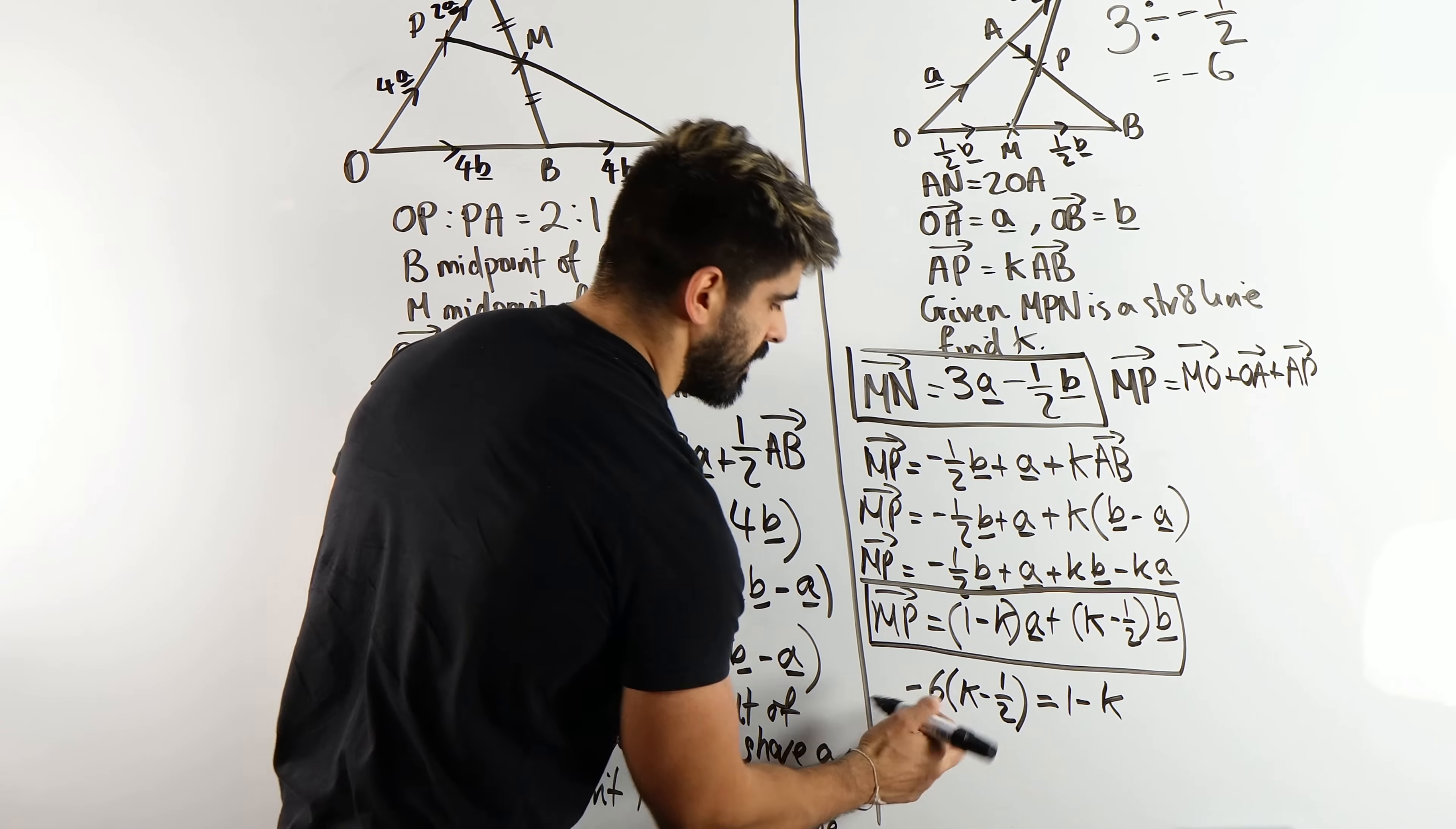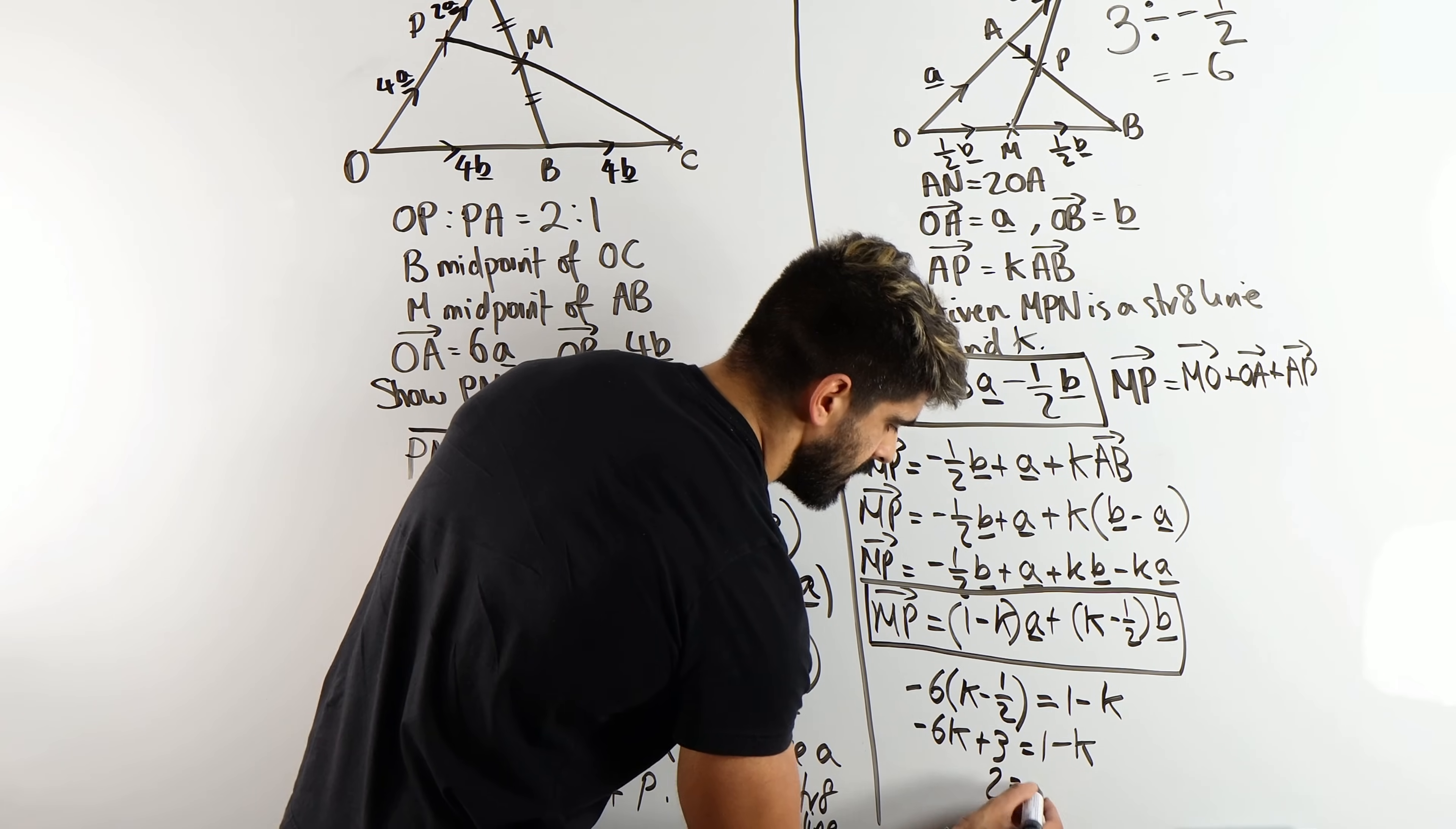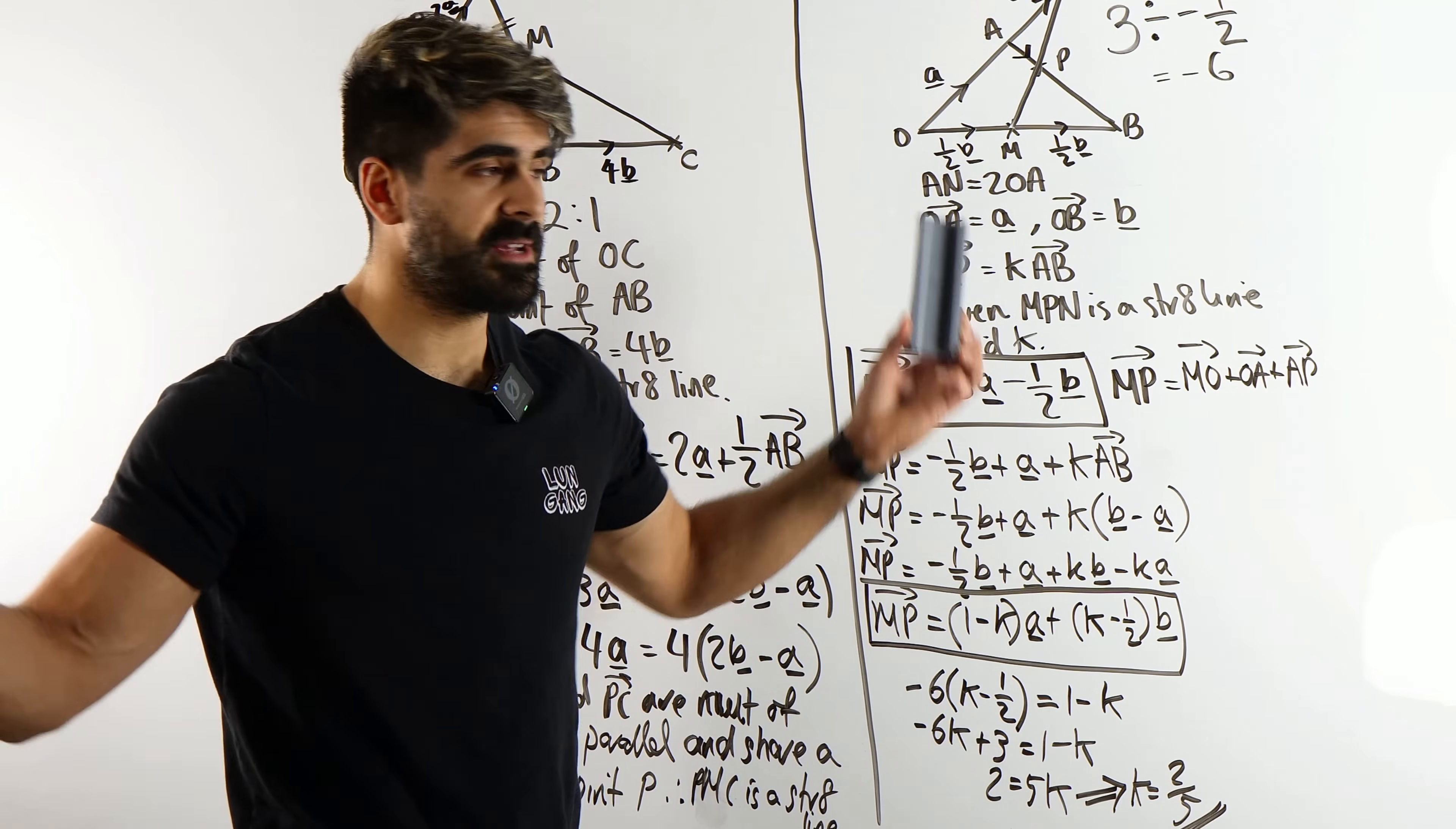So I'm saying minus six lots of k minus a half is one minus k, and we need to solve that. So we get minus six k when we expand, then it'll be plus, minus six times minus half is three, we knew that already actually, is one minus k. Then we move this to this side, this to this side, three minus one is two, is five k. And there we go guys, k is two fifths. And that is your answer.